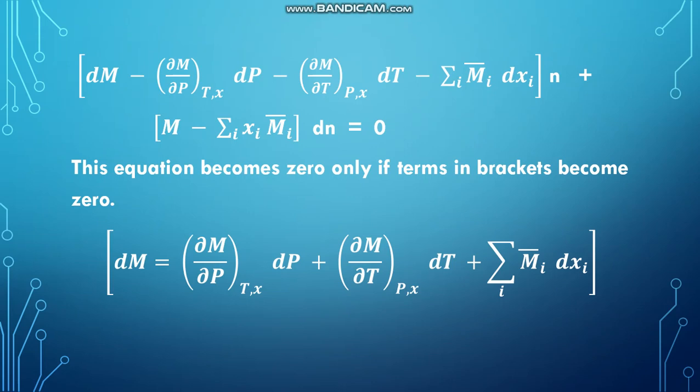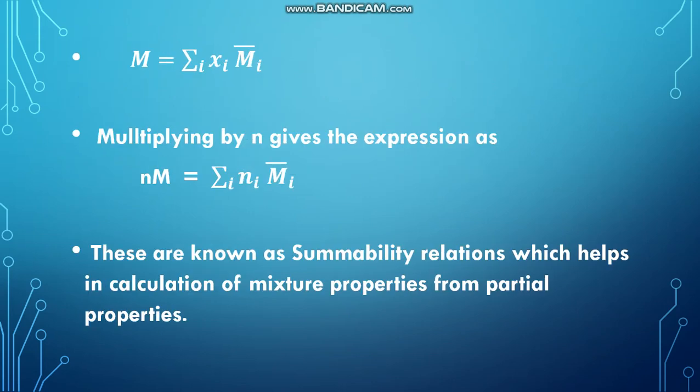Setting the first bracket to zero gives: dM equal to dou M by dou P at constant T,X into dP plus dou M by dou T at constant P,X into dT plus sigma I of Mi bar into dXi. Similarly, M equals sigma I of Xi Mi bar. Multiplying by N gives Nm equal to sigma I of Ni Mi bar. These relations are known as summability relations, which help in the calculation of mixture properties from partial properties.